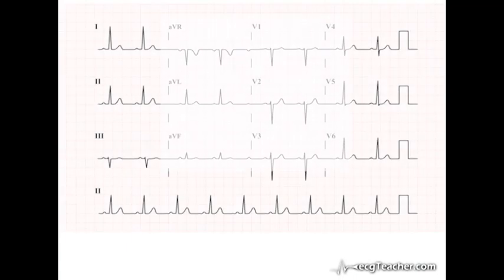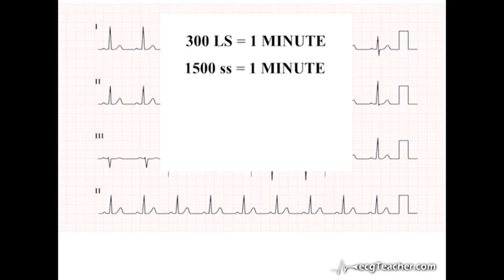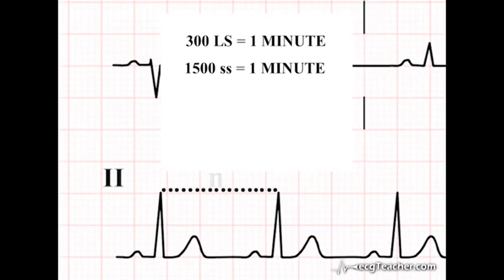You will also appreciate that, as 300 large squares equates to 1 minute, and as there are 5 small squares in each large square, 1500 small squares also equates to 1 minute. Using exactly the same logic as before, we can also calculate the heart rate by counting the number of small squares between two consecutive R waves and dividing this number into 1500. This is useful when, as illustrated on this ECG, the R waves do not fall on a set number of large squares.